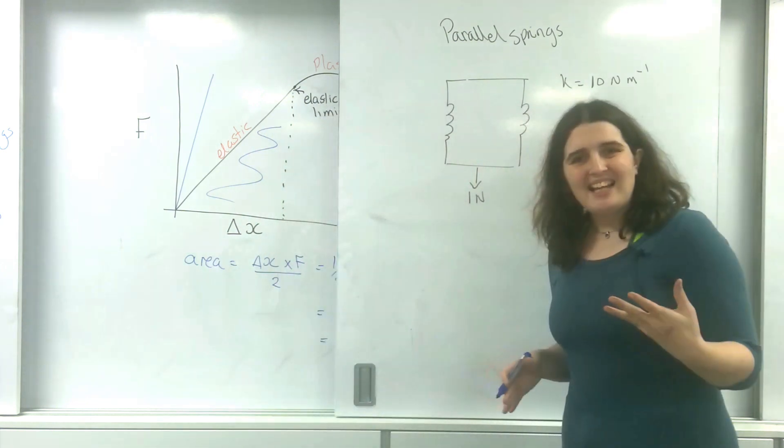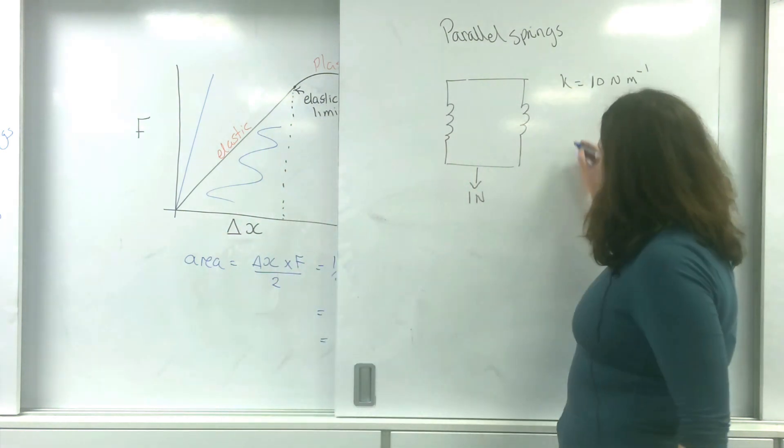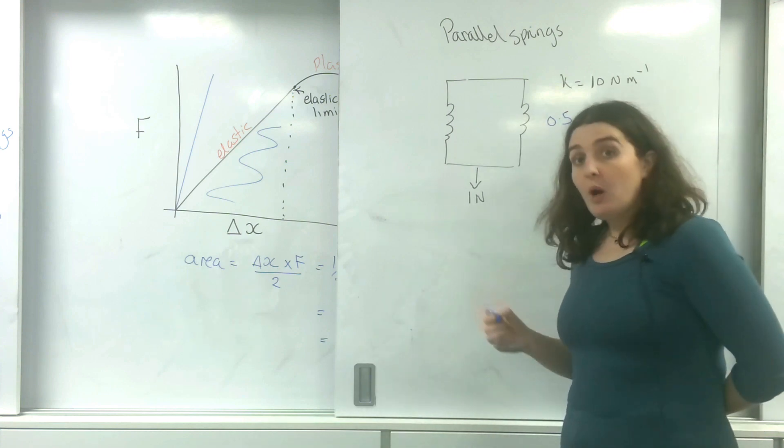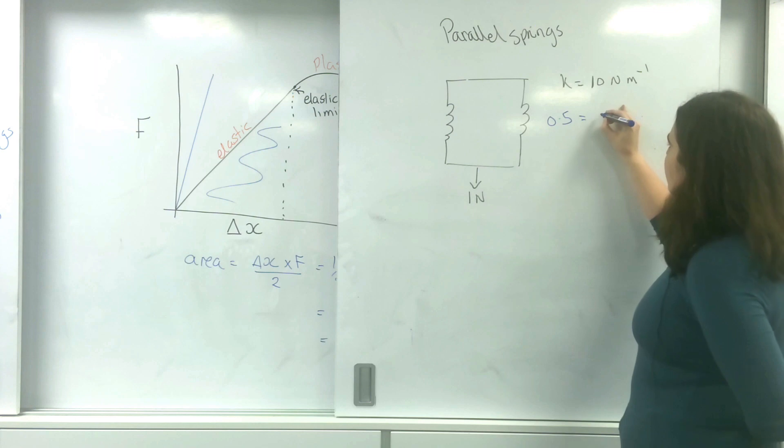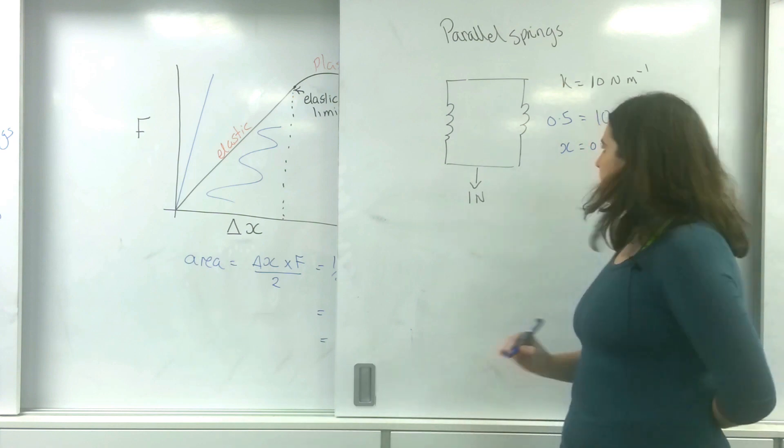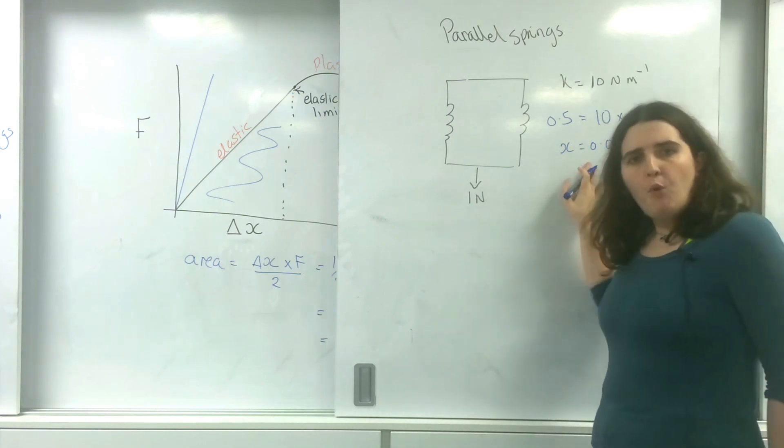So let's work out the extension for each of these. My force would be 0.5 on this one, because it's going to feel half of it. Equals 10 times X. So my extension is going to be 0.05. This is my extension for one of them.